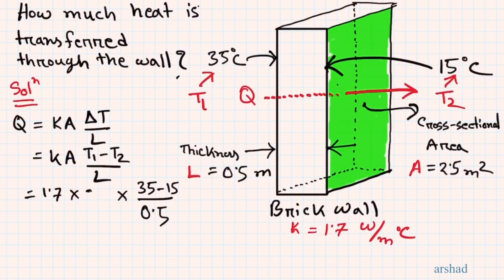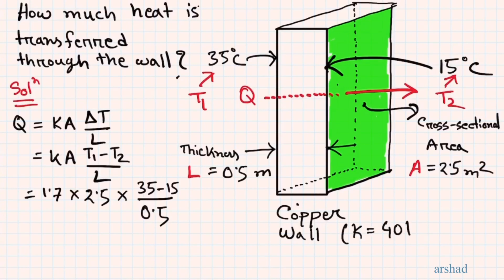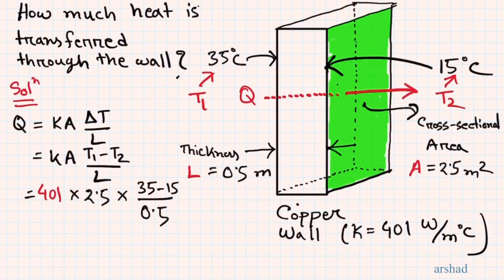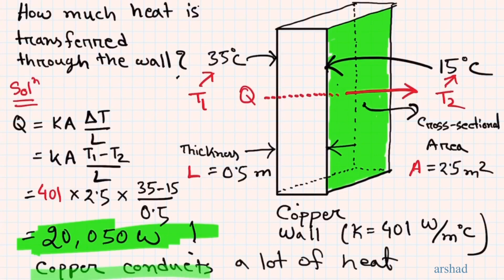Restoring A = 2.5 m² and now replacing brick with copper — which has a much higher thermal conductivity of K = 401 W/m·°C, roughly 300–350 times higher than brick — we recalculate. The result is Q = 20,050 watts, or about 20 kilowatts. The same wall dimensions but only the material changed, and the reason for such high heat transfer is copper's molecular structure giving it a natural ability to conduct large amounts of heat.